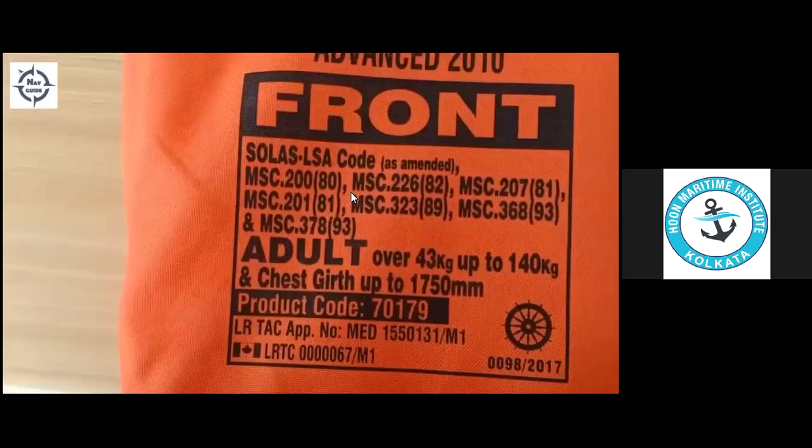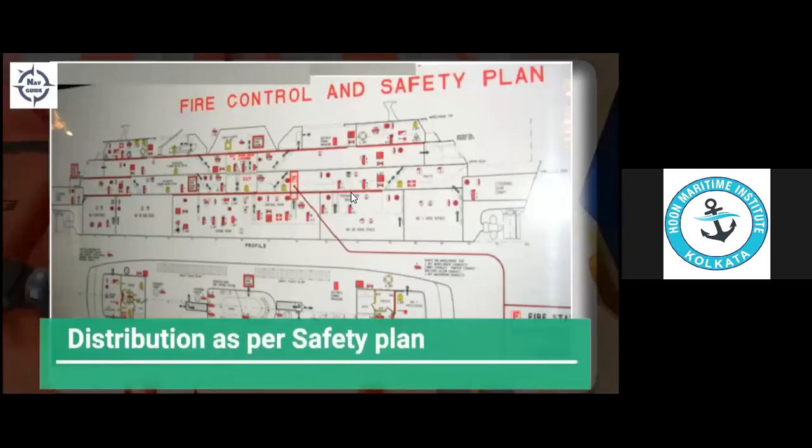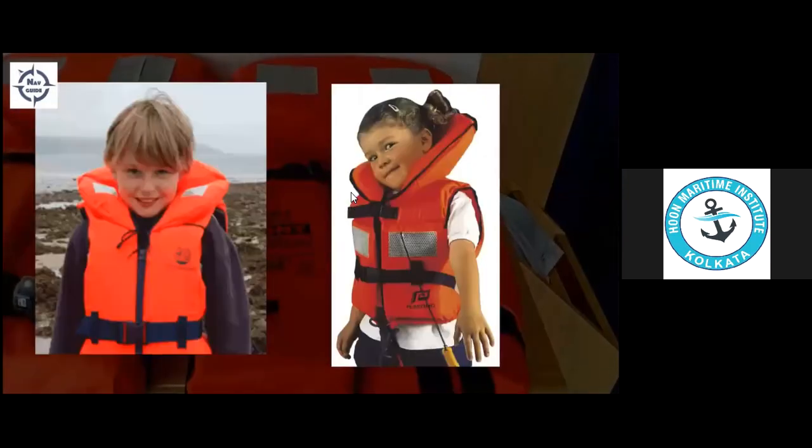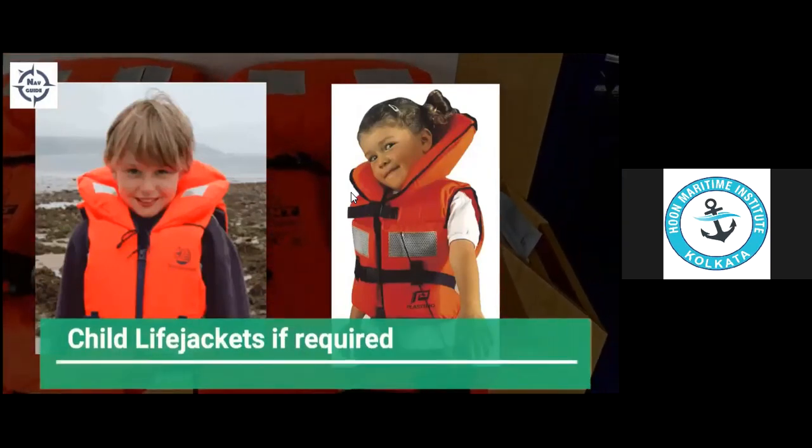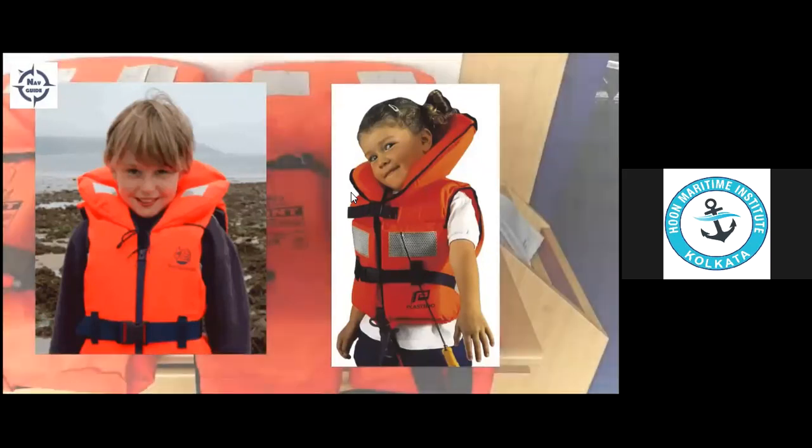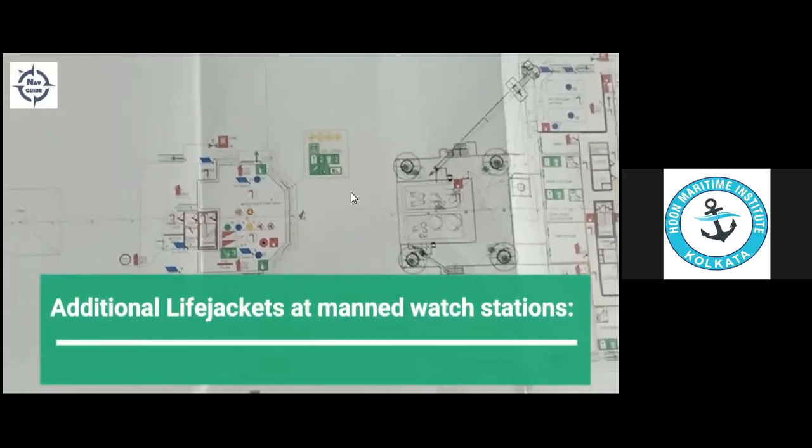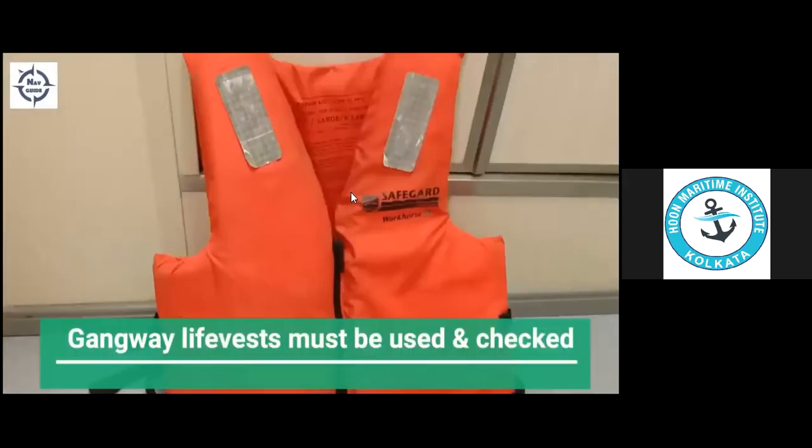The oversized life jackets must be distributed as per the ship's safety plan, but also make sure that if there is an oversized person on board, the life jacket in his cabin should not have any weight restriction. If the vessel has a child on board, additional child life jackets are needed. Additional life jackets must also be kept at manned watch stations like the bridge, engine control room, or forward life raft station. Gangway life vests must be used and checked.